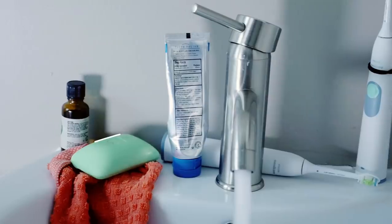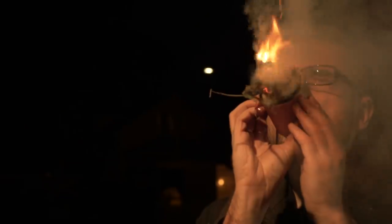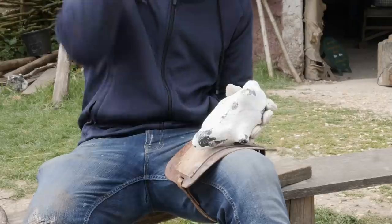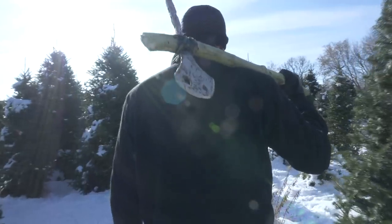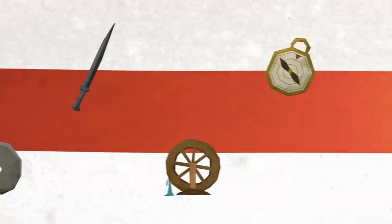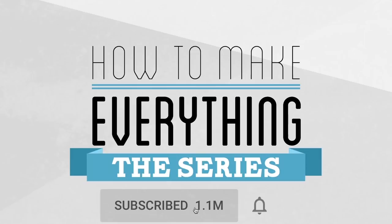Everything we use comes from 8,000 generations of collective innovation and discovery. But could an average person figure it all out themselves and work their way from the Stone Age to today? That's the question we're exploring. Each week, I try to take that next step forward in human history. My name is Andy, and this is How to Make Everything. Be sure to subscribe and turn on notifications so you don't miss the next step in this journey.